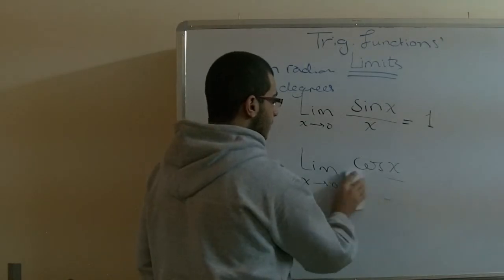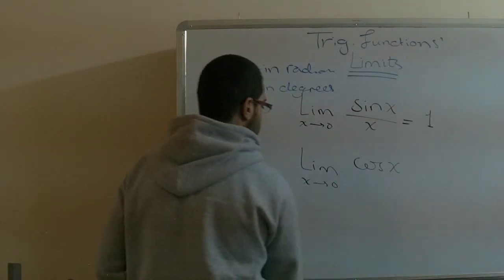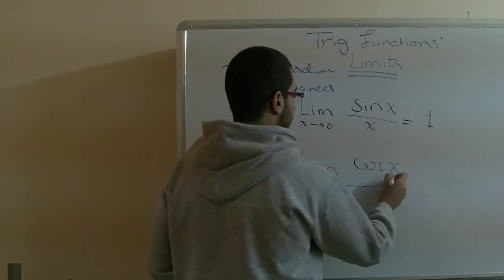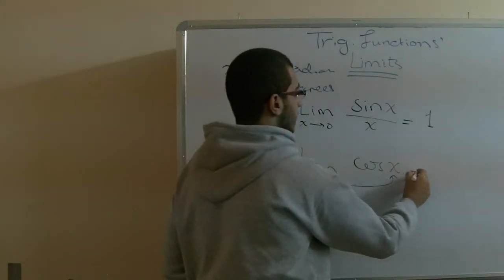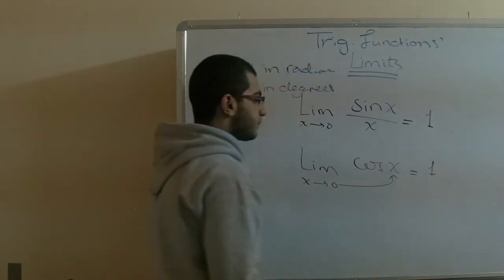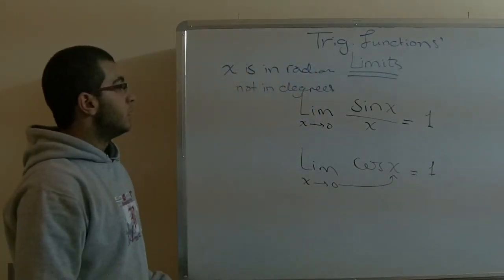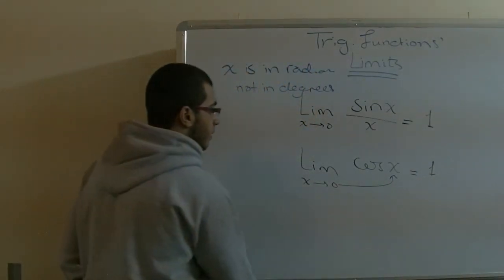But if we substitute with x equals zero, we have the cosine of zero, which gives us 1. So these were our procedures.